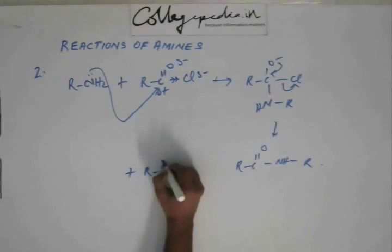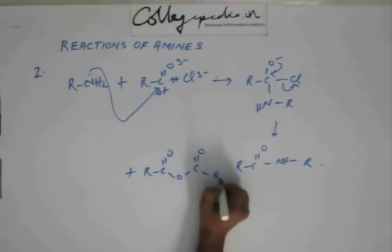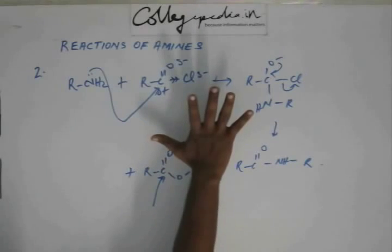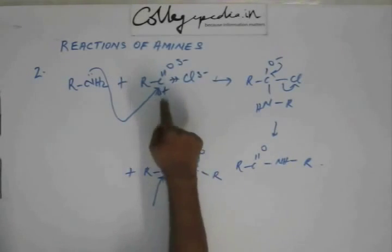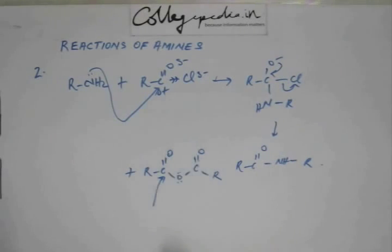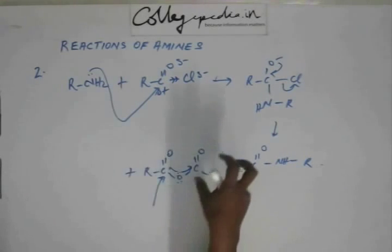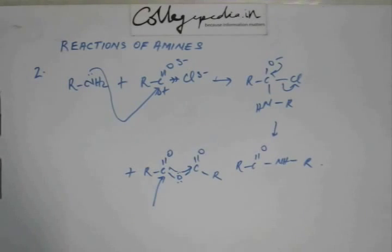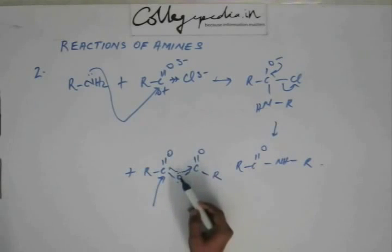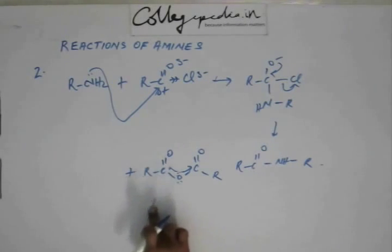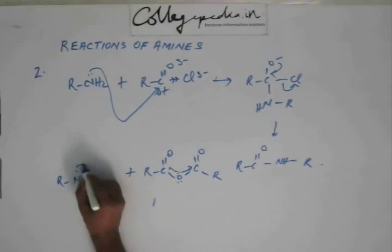A similar reaction can also occur if we have an acid anhydride instead of acyl chloride. In acid anhydride, this carbon has relatively less electron deficiency than acyl chloride. Acyl chloride is very reactive because oxygen and chlorine both pull electrons and no one donates to that carbon. In acid anhydride, the central oxygen gives electrons to both carbonyl carbons — it is in cross-conjugation and does resonance with both carbonyl groups — so this carbon has much less electron deficiency. Nevertheless, it still has some deficiency.